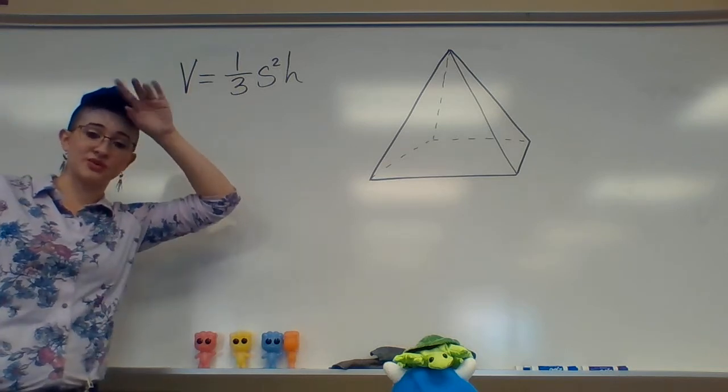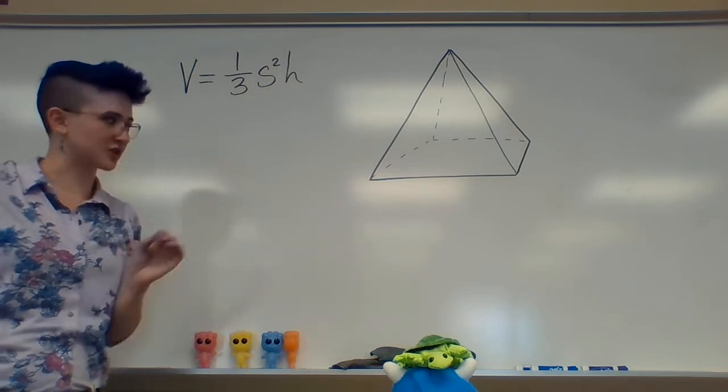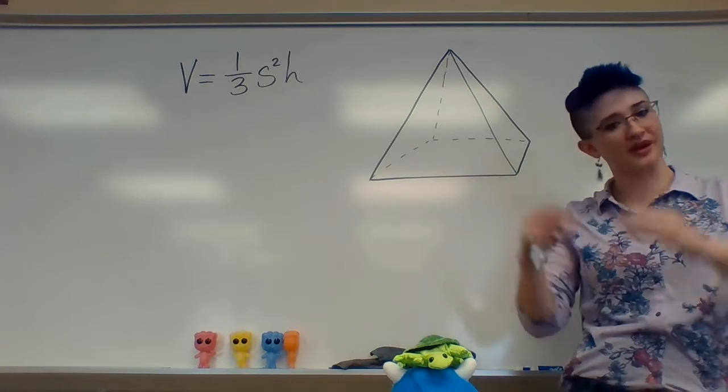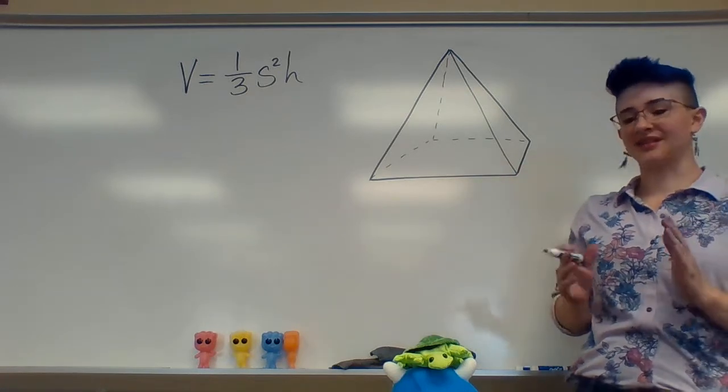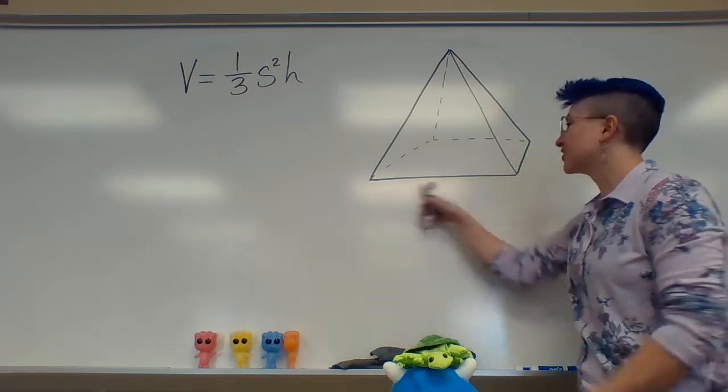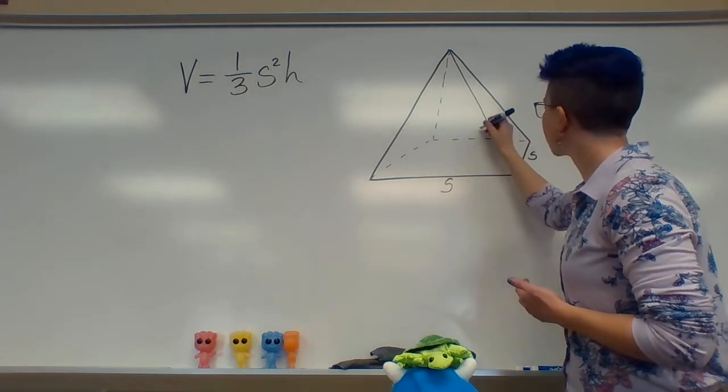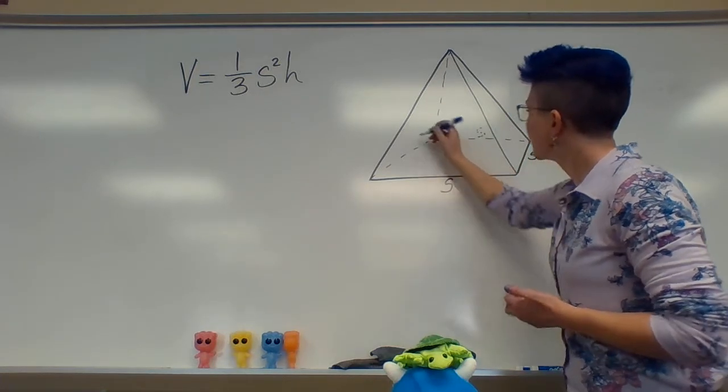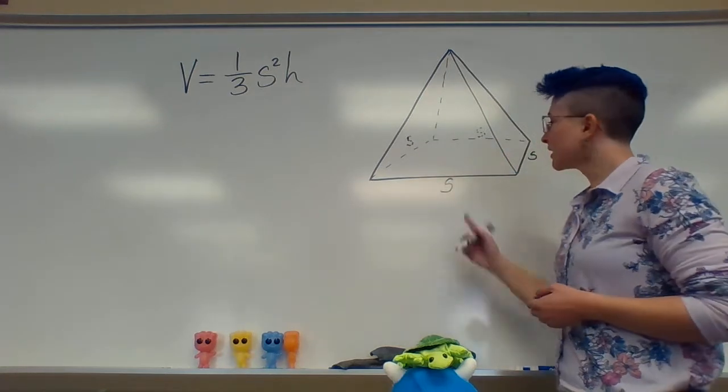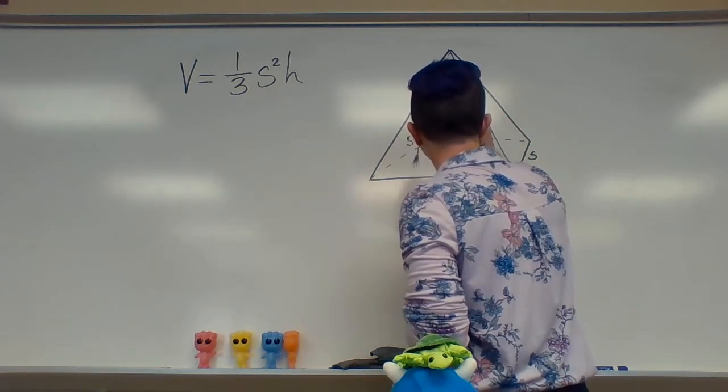So we are back to sides, which is s, and h, which is height. You know the bottom is a square, which means we're dealing with the same thing we were in a cube. A square's unique property is that all the sides are the exact same. So once I know one side, I know all the sides. So this side is the same as this side, it's the same as this side, it's the same as this side.